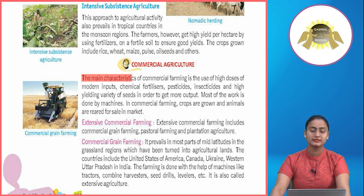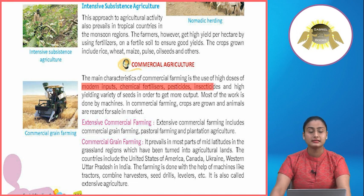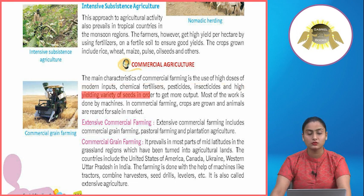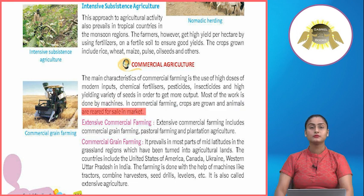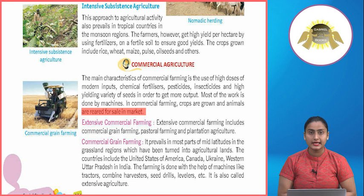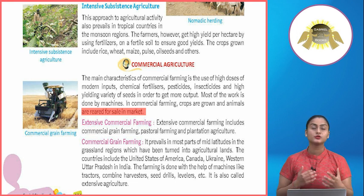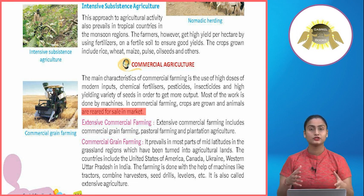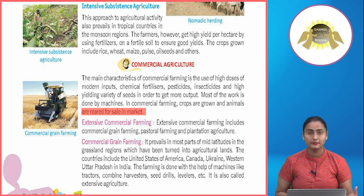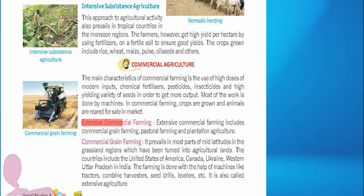Commercial agriculture: The main characteristics of commercial farming are the use of high doses of modern inputs — chemical fertilizers, pesticides, insecticides and high-yielding variety seeds — in order to get more output. Most of the work is done by machines. In commercial farming, crops are grown and animals are reared for sale in the market to earn profit. Large areas of pasture land are farmed intensively, with greater use of machines rather than manual labor.